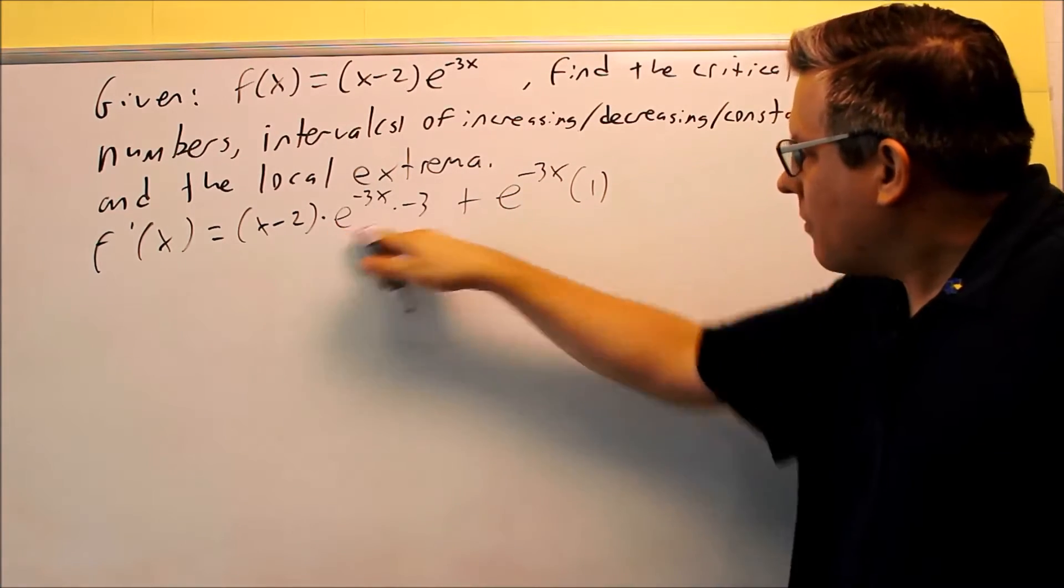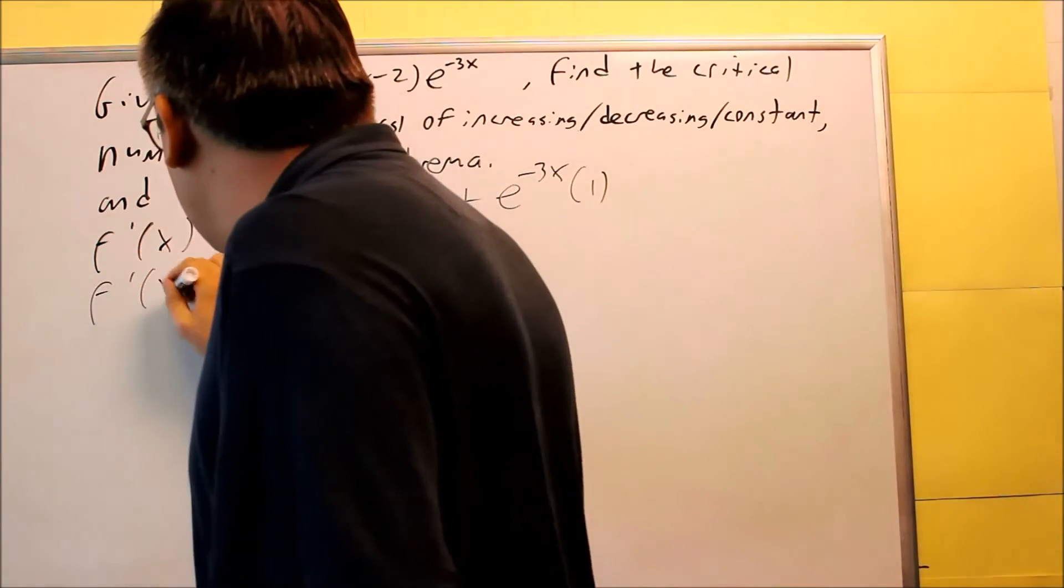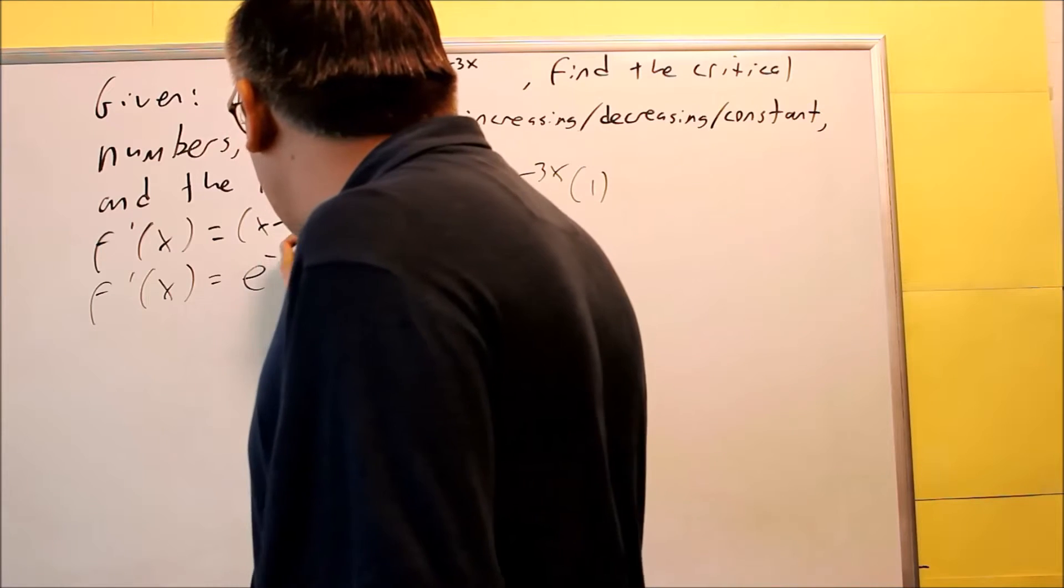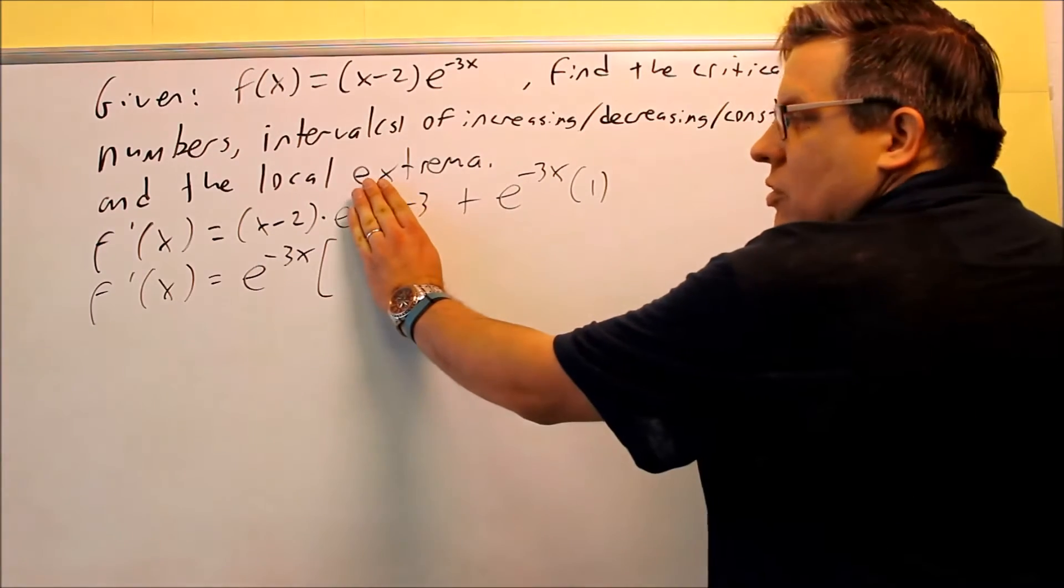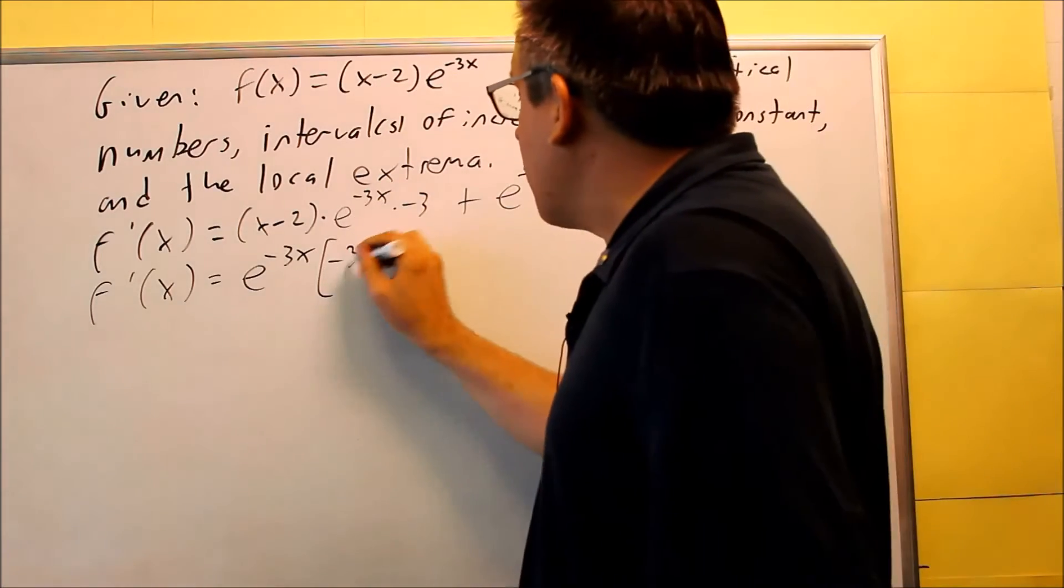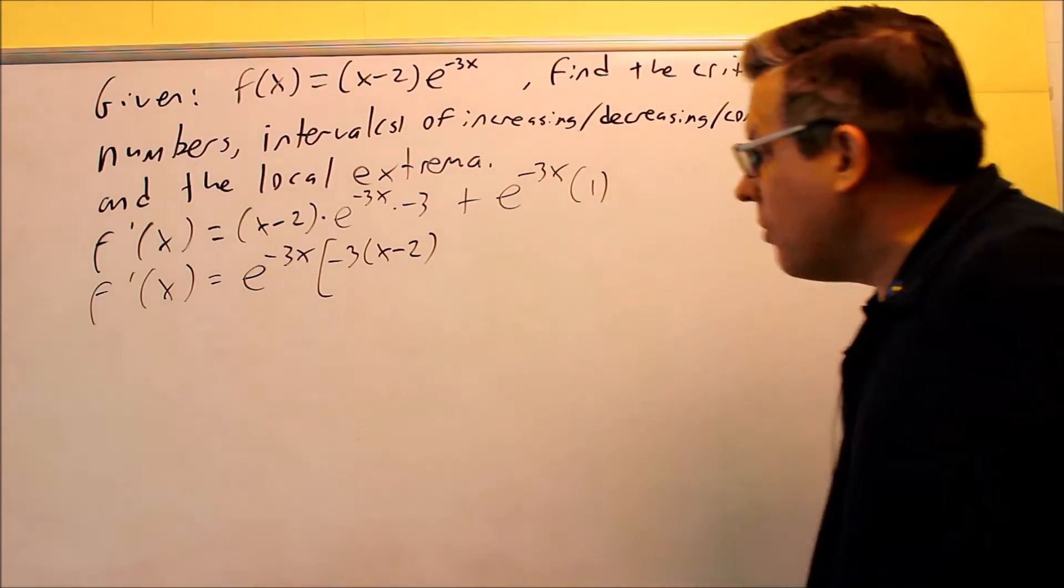We have a common factor here, e to the negative 3x. That's what we're going to pull out. So e to the negative 3x we have there. And then if we remove this, we get negative 3 times x minus 2. And then if we remove this one, we get 1.